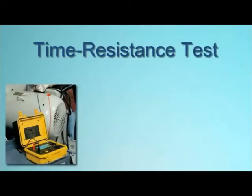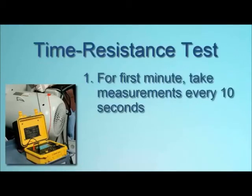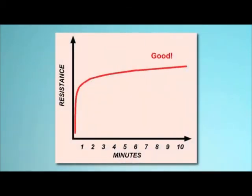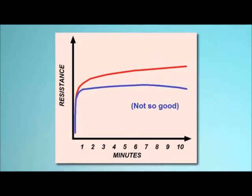Another insulation resistance measurement method is the time resistance test, also referred to as the dielectric absorption test. It involves conducting a 10-minute test. For the first minute, during which absorption current will have the highest effect on resistance, measurements are taken every 10 seconds. After the first minute, measurements are taken once per minute. When you plot the results, you should see a curve that rises relatively rapidly at first and then continues to gradually rise throughout the testing period. If instead the curve is relatively flat or begins to turn down as the test progresses, moisture, dirt, or other factors may be compromising your insulation.